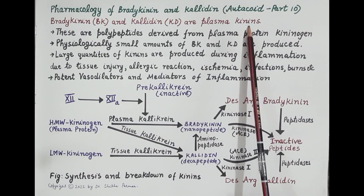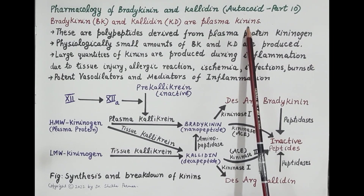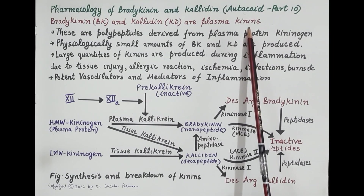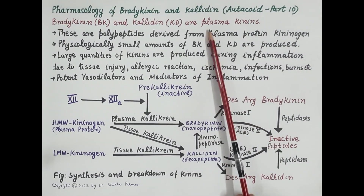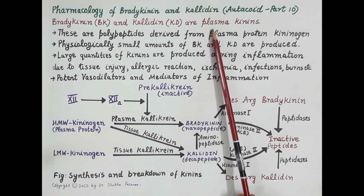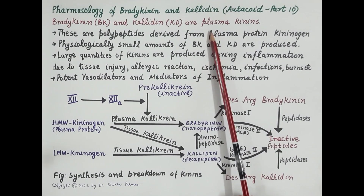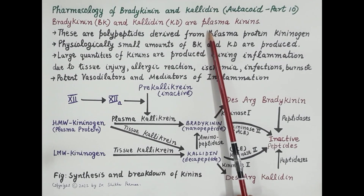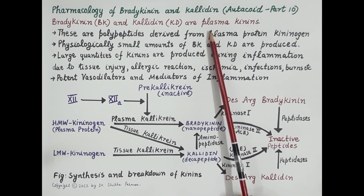Apart from this, excessive accumulation of bradykinin in the lungs causes dry cough. Excess production of bradykinin also results in angioedema, so bradykinin and calidin should not be produced or accumulate in the body in large amounts.